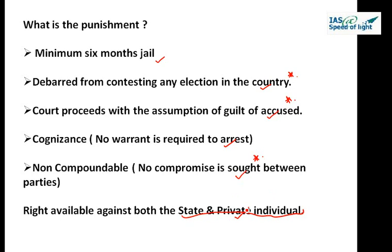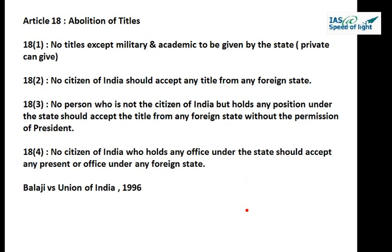This is Article 17. Let us move to Article 18 on page number 40, which is about abolition of titles. Article 18 Part 1 says no title, not being a military or academic distinction, shall be conferred by the state. This means no titles except military or academic distinctions can be given by the state. Private people can confer these titles, but not the state.